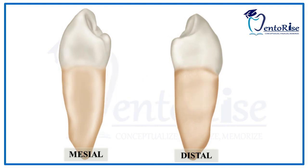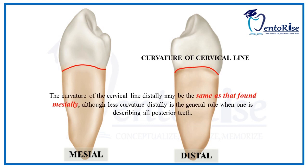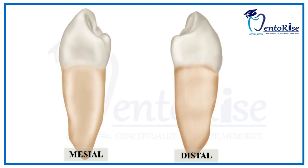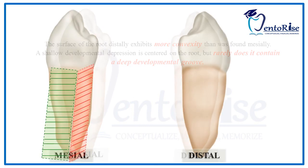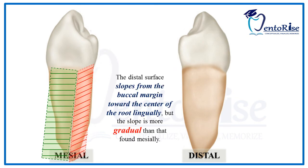Comparing the cervical lines mesially and distally: distally, the cervical line is curved, but the extent of curvature is less compared to that present mesially — a general rule for all posterior teeth. On comparing the root surfaces: the distal surface of the root exhibits more convexity than that found mesially. A shallow developmental depression is centered on the root, but rarely is there a deep developmental groove as found mesially. The distal surface slopes from the buccal margin towards the center of the root lingually, but the slope is more gradual than that found mesially.